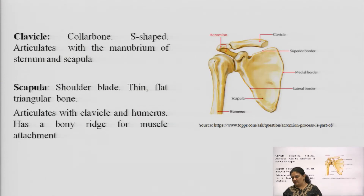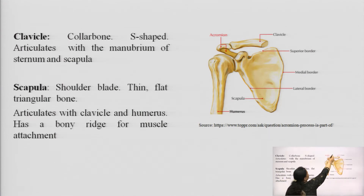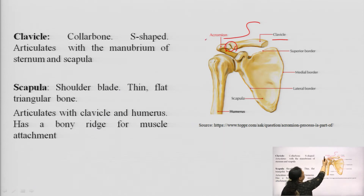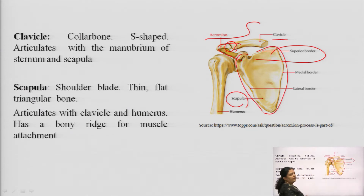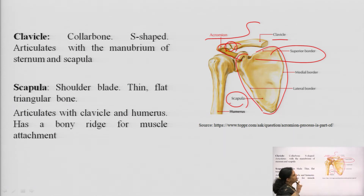In the diagram, you will see the S-shaped structure which is the clavicle, the shoulder bone, which articulates with the acromion, and this acromion shows articulation with the scapulae. The scapulae is a rough triangular structure present on both back sides. The clavicle makes an articulation with the scapulae via the acromion. The scapulae is divided into three parts: the superior border, the middle border, and the lateral border.